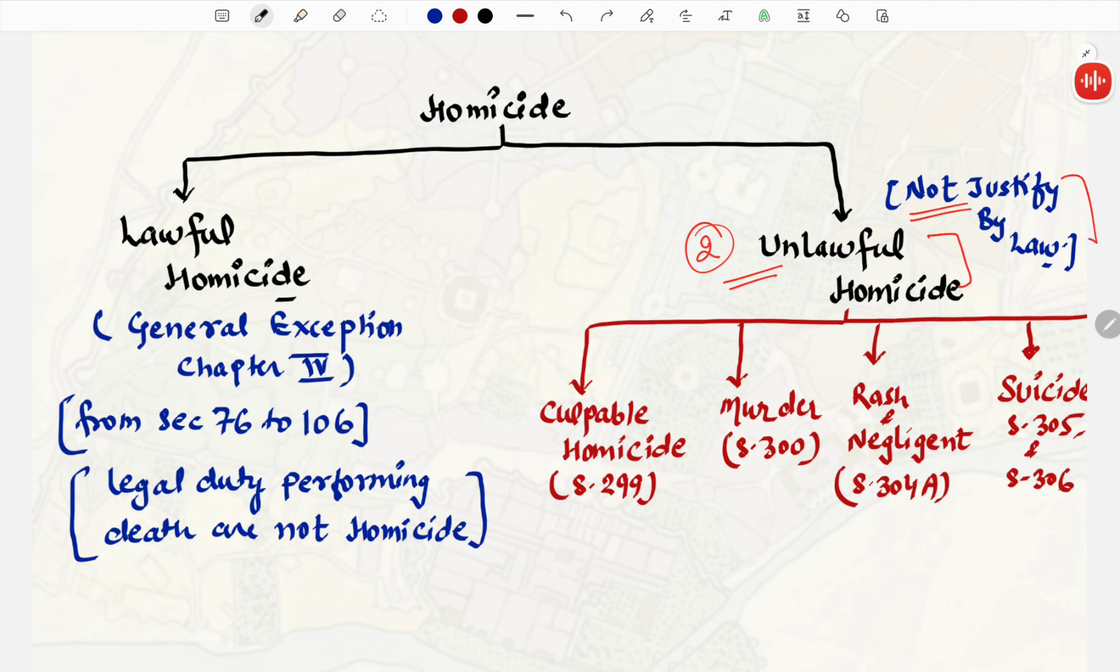Unlawful Homicide are further divided in four parts. First is the Culpable Homicide, which comes under section 299. Second is Murder, which comes under section 300. The third type of Unlawful Homicide is Rash and Negligence, which comes under section 304a. And the fourth type is Suicide, which comes under section 305 and 306.